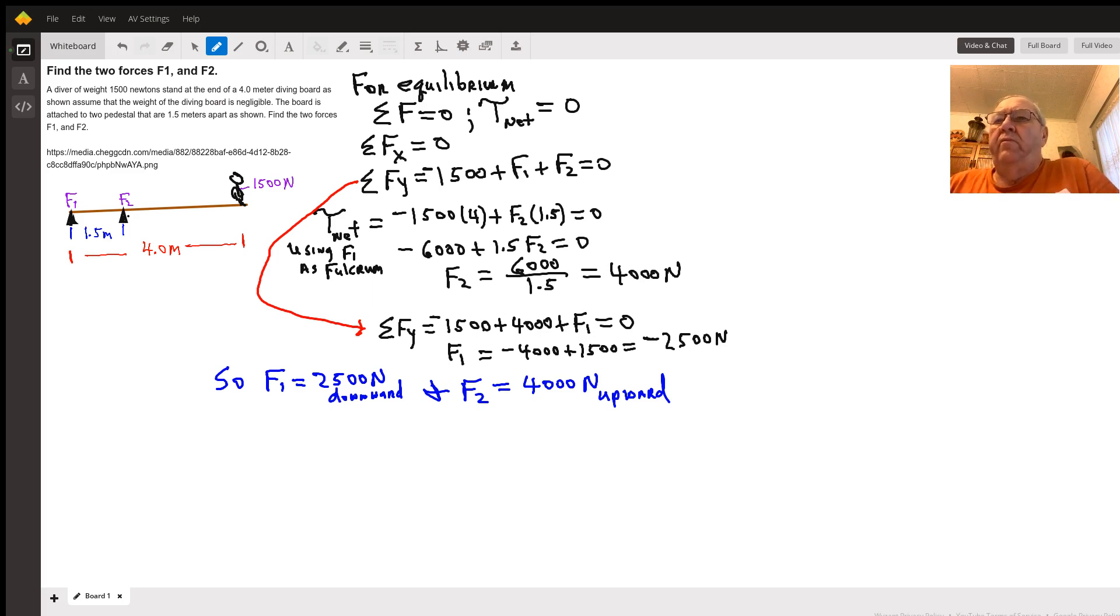In equilibrium, for the forces, we look in the X direction, and there are no forces. So the sum of the forces in the X direction are zero. In the Y direction, since the diver's weight is pushing it down, it would be 1,500 newtons going down, plus F1 plus F2 have to be equal to zero.